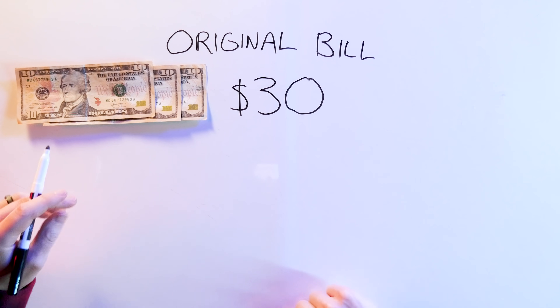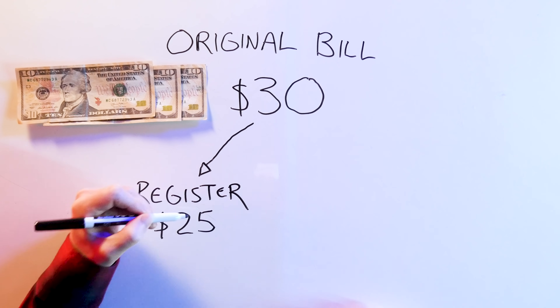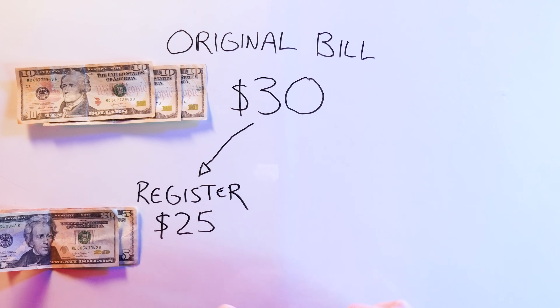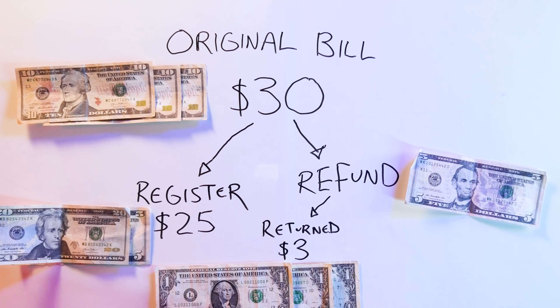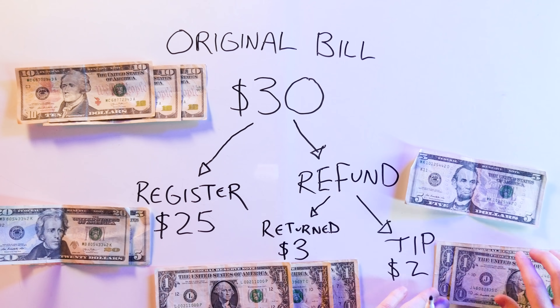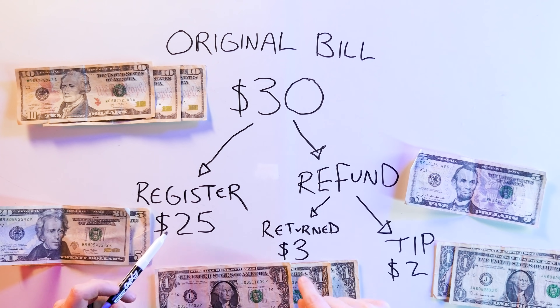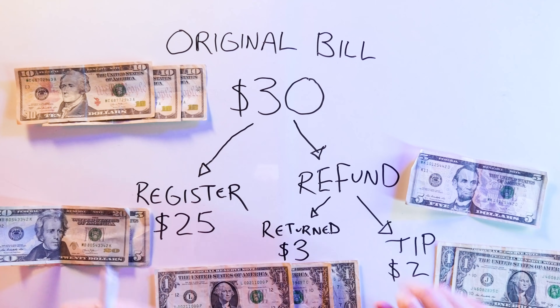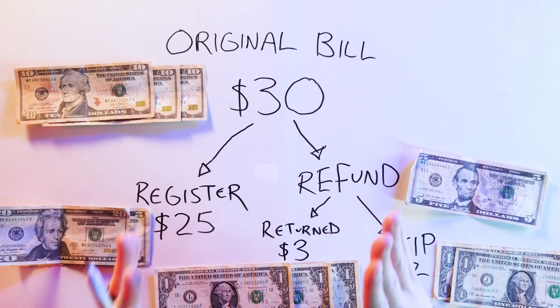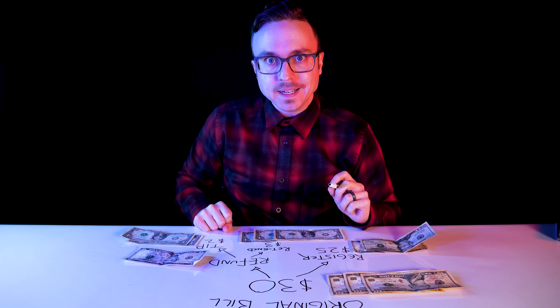We hear 9 plus 9 plus 9 plus 2 equals 29 and wonder where the dollar went. But it's not missing — we just played a mathematical sleight of hand. Here's the breakdown: we started with $30. $25 of that is still in the restaurant's cash register, the other $5 has been given back — $3 returned to you and $2 for the busboy's tip. 25 plus 3 plus 2 equals 30. So where exactly is the disconnect?